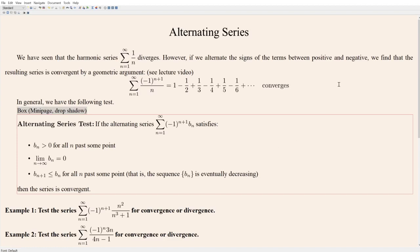This is going to be another short one, but this is another important convergence test to internalize. We have seen that the harmonic series diverges — the sum of all the reciprocals. However, as it happens, if we alternate the signs of the terms of the harmonic series, then that's actually enough to get it to converge instead.